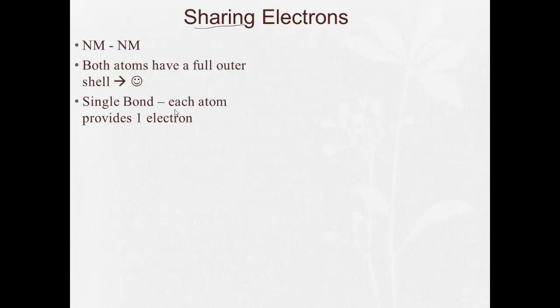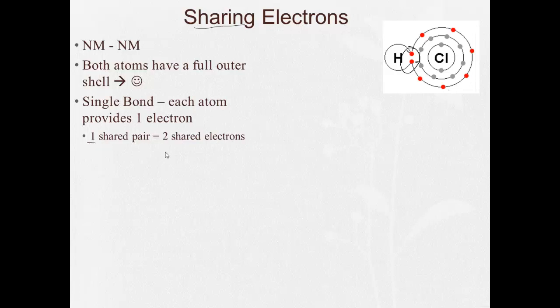There's different kinds of covalent bonds. The first one is nice and simple, a single bond, where each atom provides one electron. For example, here in hydrogen chloride, the hydrogen is providing one electron, the chlorine is providing the other electron, and that would be a single bond. So there's one shared pair equals two shared electrons. And you can be asked on a test questions about either one. They'll ask how many pairs of shared electrons, one, or how many shared electrons total, which would be two.